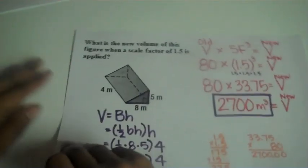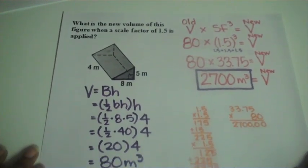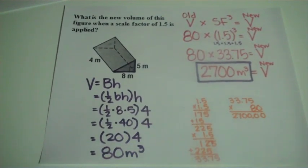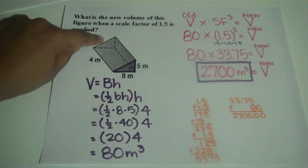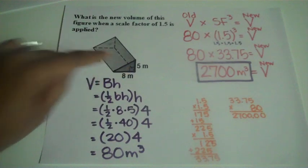Alright, in example number 4, the volume of this triangular prism works out to 80 meters cubed. Hopefully you caught that this is a triangular prism, so your bases were triangles.